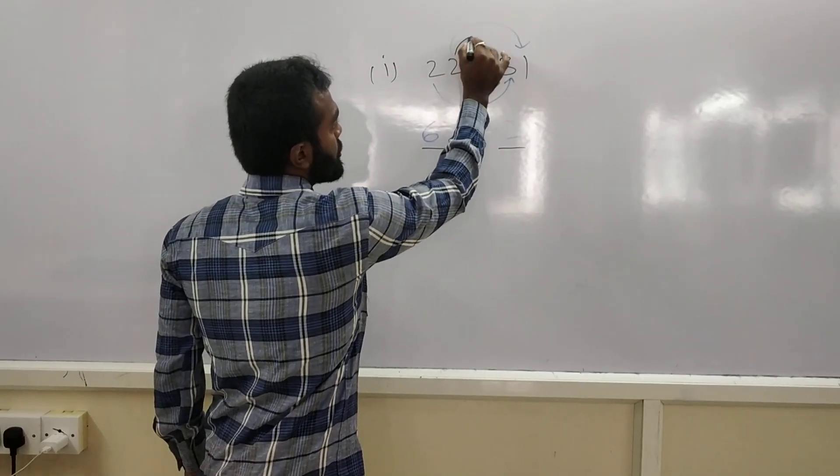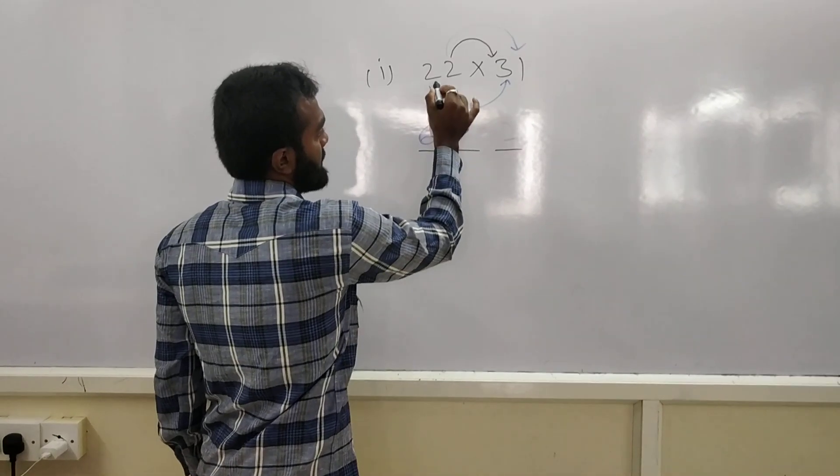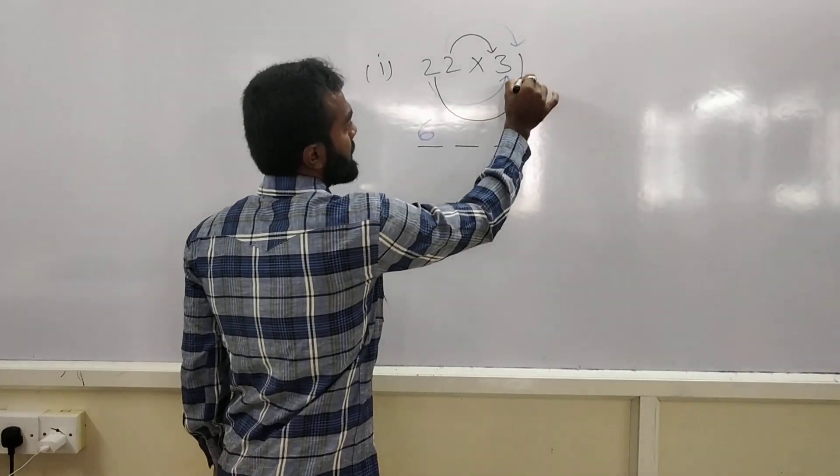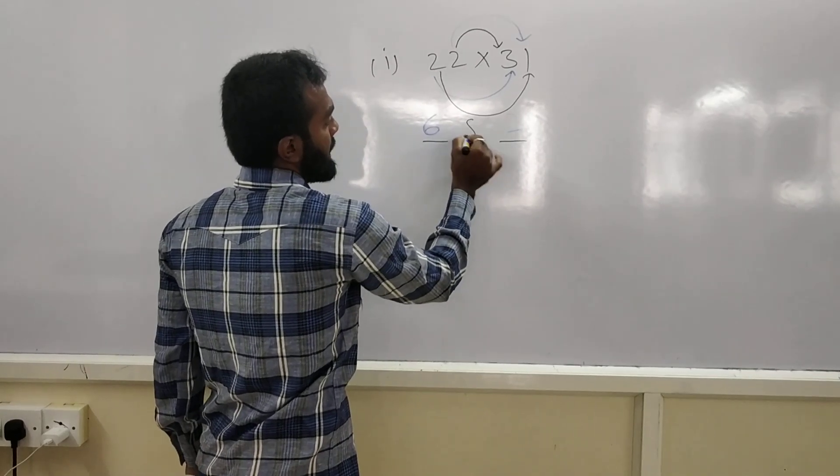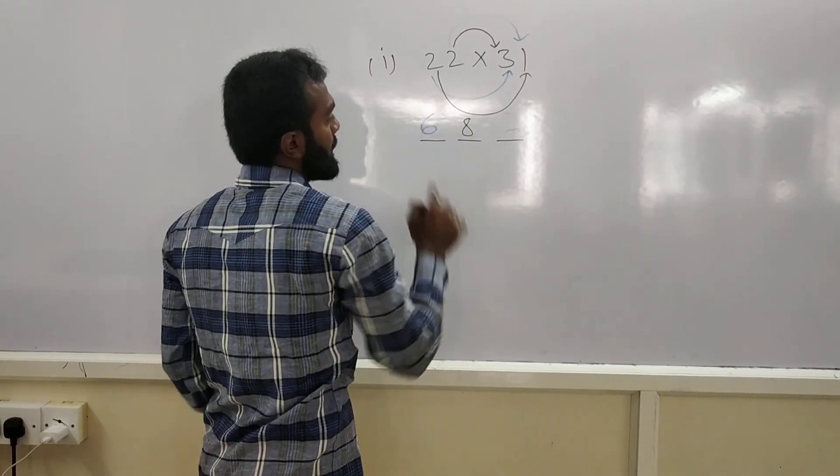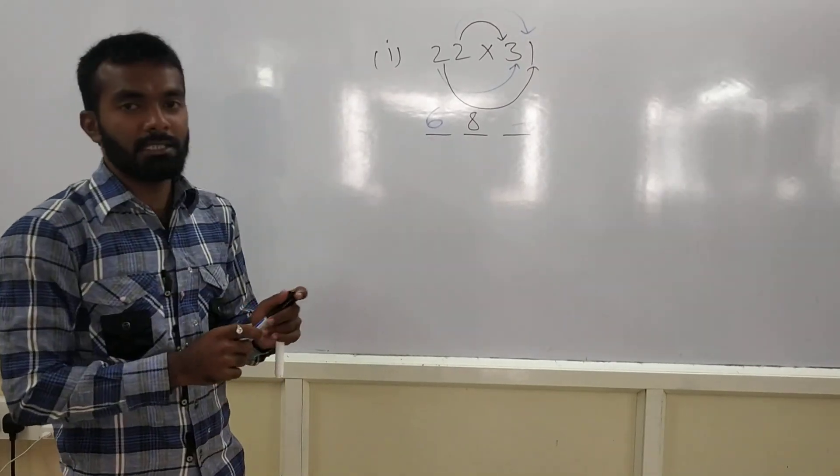Multiply these both numbers. 2, 3 is 6. 2, 3 is 6. Plus. Multiply these 2 numbers. 2, 1's 2. 6 plus 2 is nothing but 8. And, your final answer for multiplying the 22 multiplied with 31 is 682.